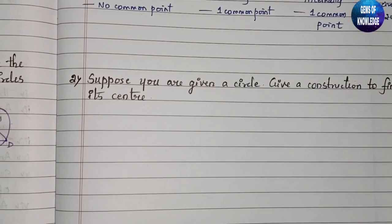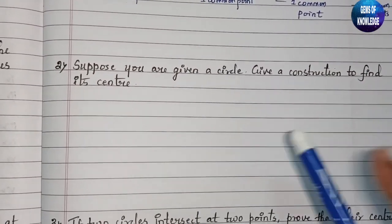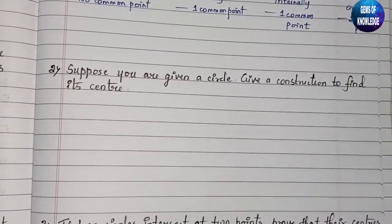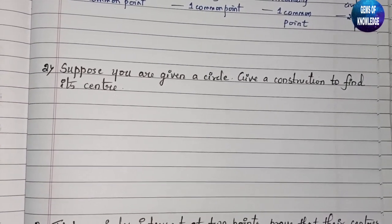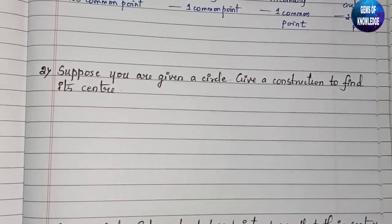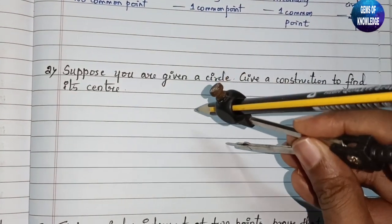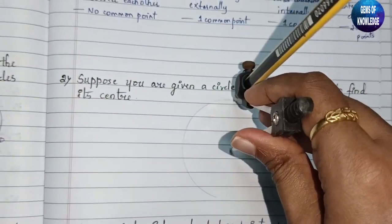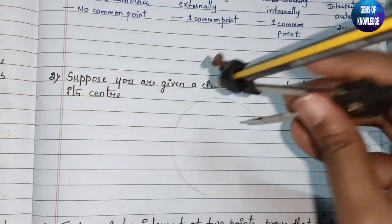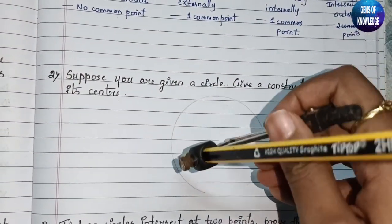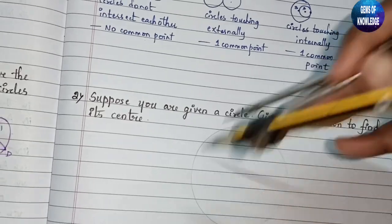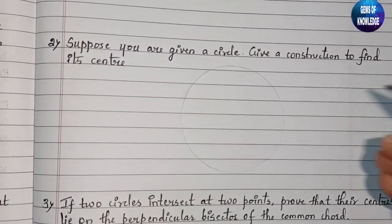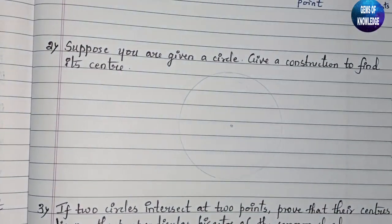The next question: suppose you are given a circle. You need to show a construction to find its center. Let us draw a circle here — just a rough diagram.